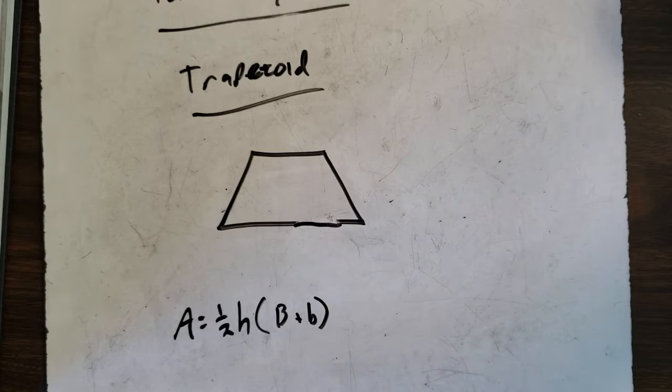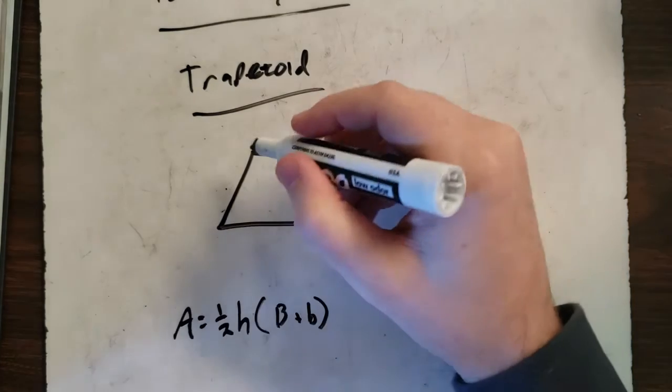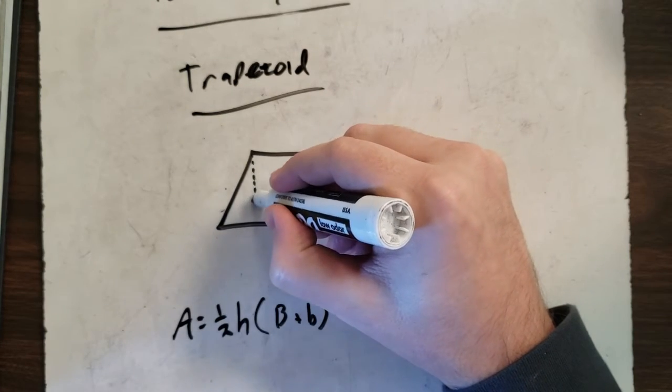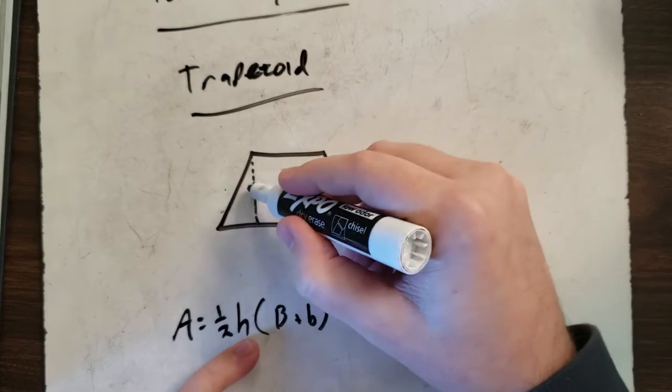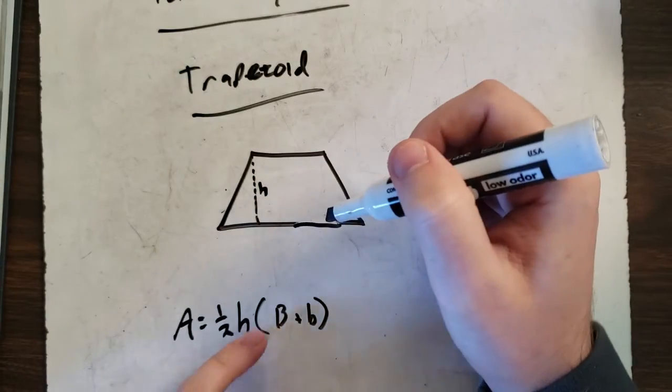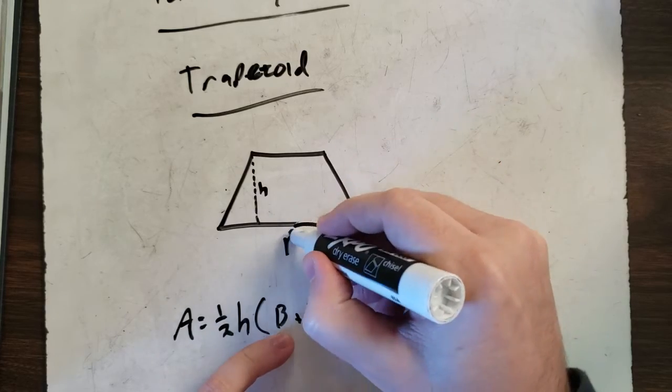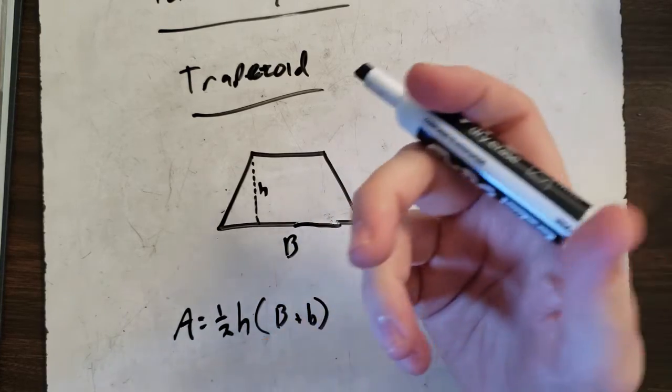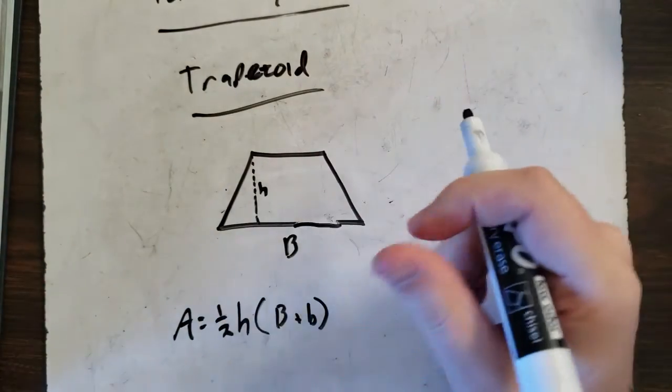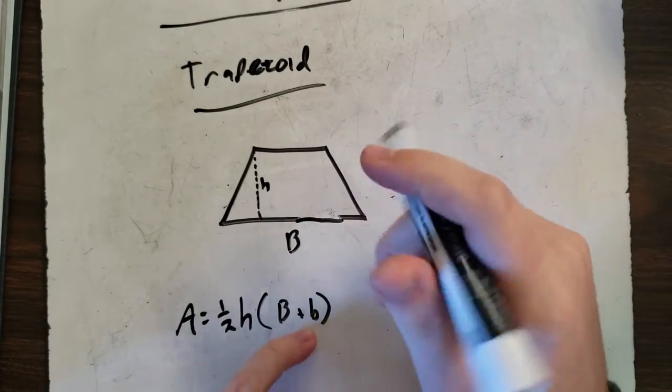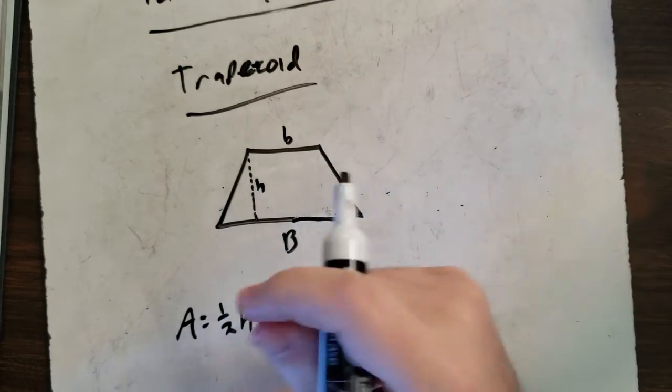Now don't get freaked out. Here's what it's going to look like. I'm going to give you this. They'll give you the height. So this will be the height. Your big B is the big base, the bottom. It's usually the bottom. That's the bigger of the top and bottom sides. The small b is the other side, the smaller side.